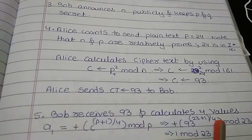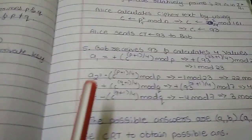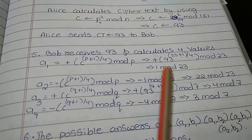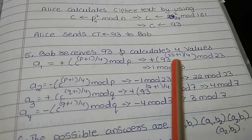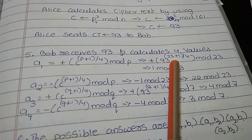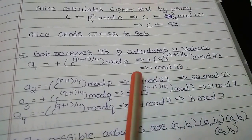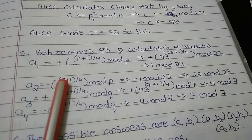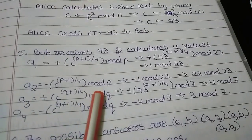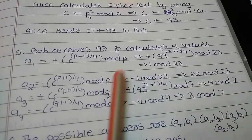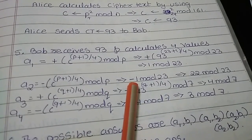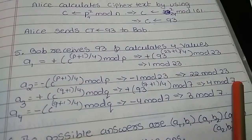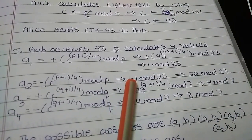So he is going to calculate the four values by using the formula A1 equals to plus C to the power P plus 1 by 4 mod P. So C is 93, the value of P is 23 plus 1 by 4 mod 23, so the remainder I am getting 1 mod 23. Similarly calculate A2 which is minus C to the power P plus 1 by 4 mod P, which is going to be minus 1 mod 23. We cannot have the negative values in the modulo operation, so I will perform 23 minus 1 that is 22 mod 23 in order to make this negative value as positive.